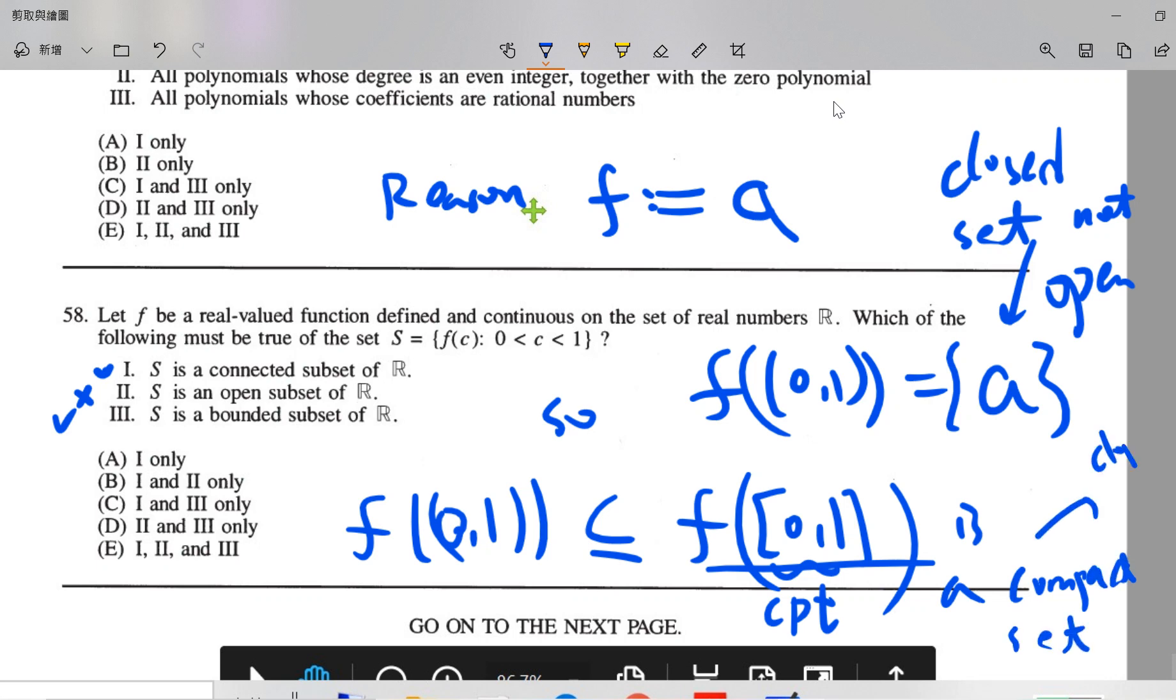So it means closed and bounded. So that means f(S) is a subset of some bounded set. So f of the open interval is bounded. This is bounded. So this is the answer, C. C is the answer. That's it.